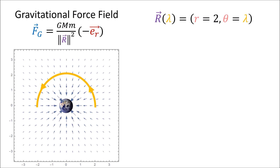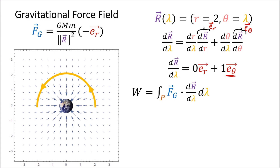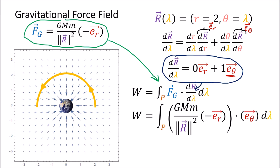This semicircle path has a parameterization where the radius is always 2 and the angle is increasing with time. We get the formula for the tangent vector dr/dλ using the chain rule. Recall these vectors are just the polar basis vectors er and eθ, and the components of the tangent vector can easily be calculated from the parameterization. Computing the derivatives, we get that the tangent vector always points along the theta basis vector, because the radial component is 0.